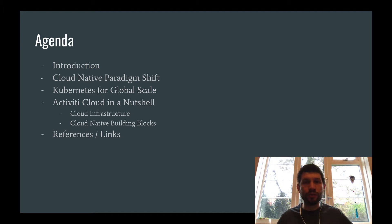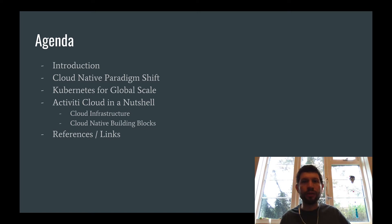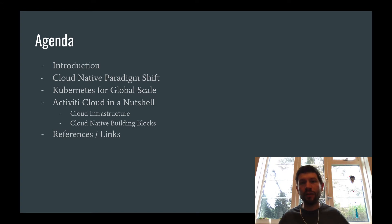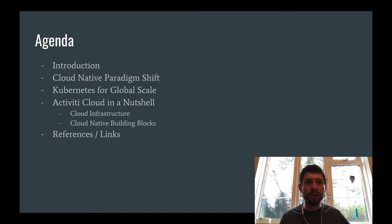I will talk about why we decided to go full-on Kubernetes as our main deployment infrastructure and why we chose that for production-grade deployments. We also need to discuss what we have defined as Activiti Cloud infrastructure and the main set of services you will find there, and then we'll jump into how our cloud-native building blocks use this infrastructure to scale, be smarter, and understand the context they are operating in. At the end I will give you a set of references and links, and how you can get in touch to be a community contributor.